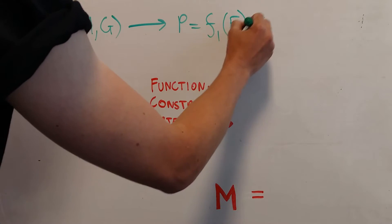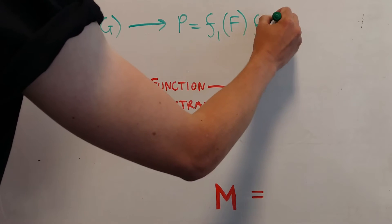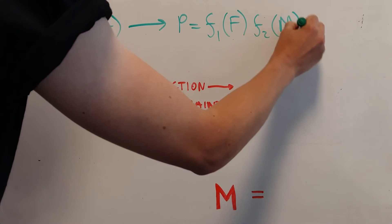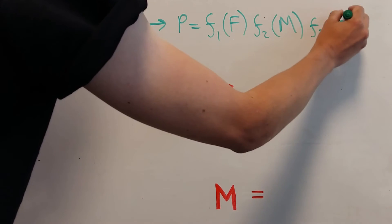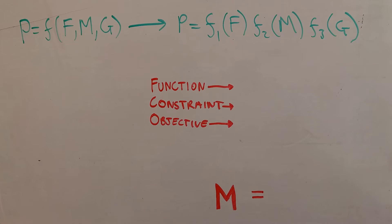In the majority of cases, these parameters are separable and the equation can be written as this. The optimal material choice becomes independent of F and G, leaving M, the material index.